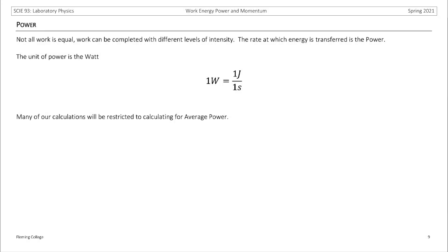If we want to think about doing work faster, we have a measurement for that called power. The rate at which energy is transferred is referred to as power. Power equals change in energy over change in time, which is the same as work over time. The unit is a joule per second, referred to as the watt. Many of you have seen this unit before — when you purchase light bulbs, they are measured in watts. Many of our calculations for this type of problem will focus on calculating the average power applied.